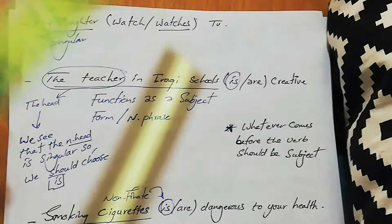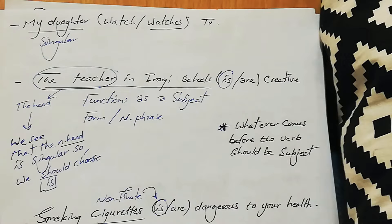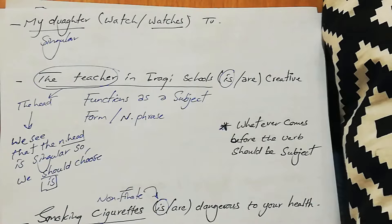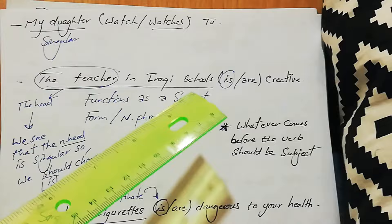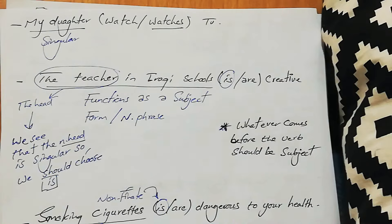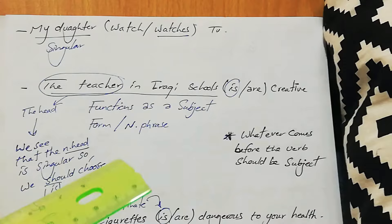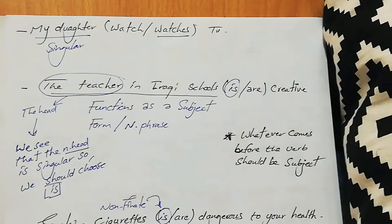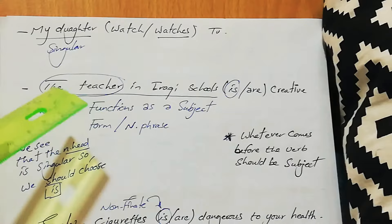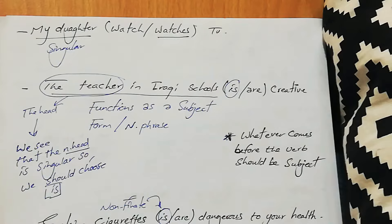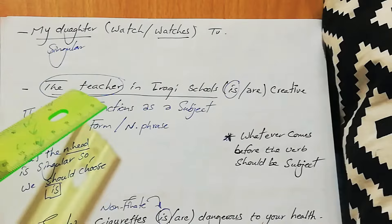The subject of that sentence is the noun phrase 'The teacher in Iraqi schools.' It is a noun phrase — a phrase doesn't have a verb. There should be a head: the head is 'the teacher.' The noun head is singular, so we should choose 'is.' We can recognize the subject as whatever comes before the verb.